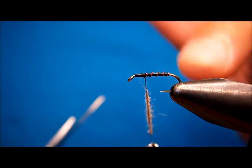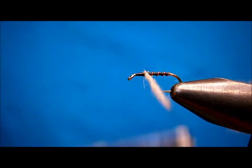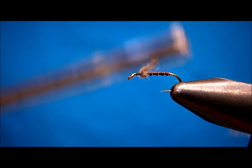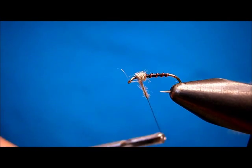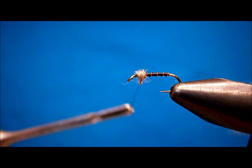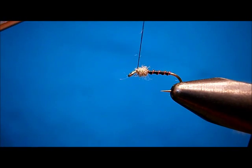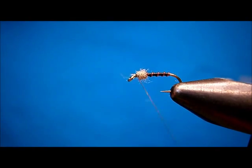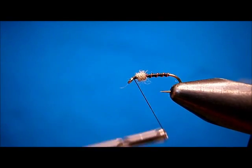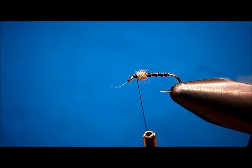Simply just wrap forward. And you can wrap back over it just a touch, and then forward again. And wrap down to the eye. Wrap back up. Form the head.